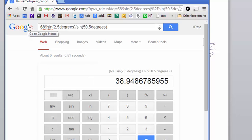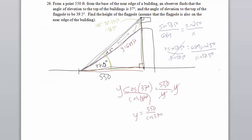If I type that in right, it should spit out my answer, which is 38.9 feet. So x is equal to 38.9 feet, which is the height of the flagpole.